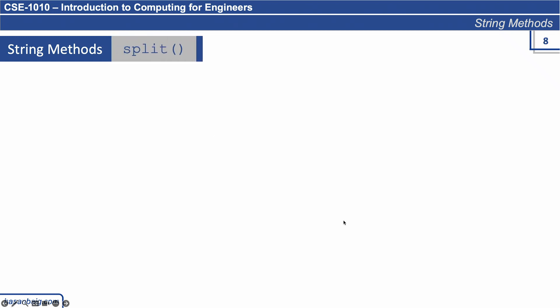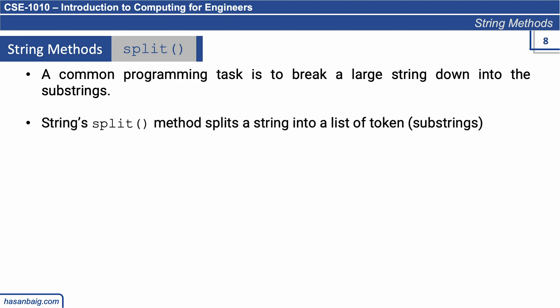What we are going to study next is the split method. A common programming task is to break a larger string down into substrings. The split method actually splits the entire string into a number of chunks and arranges them into a list of elements. It splits a string into a list of tokens or substrings and returns the list of all those tokens as output.